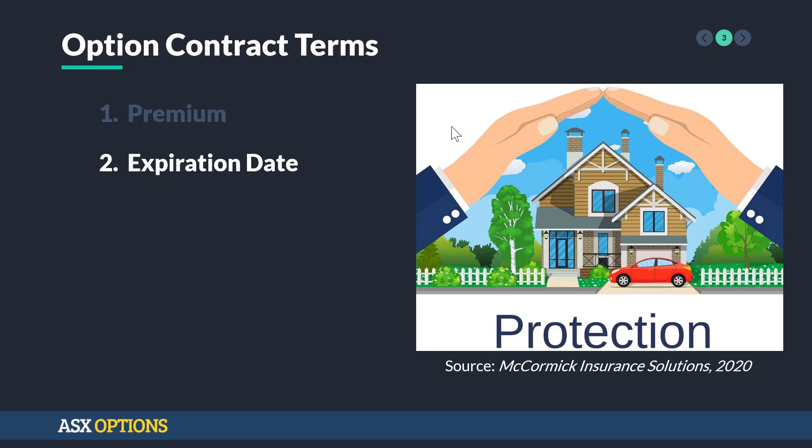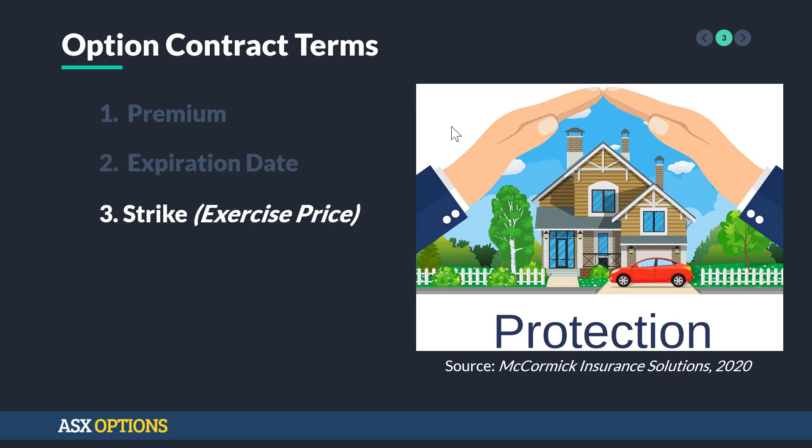Number two is the expiration date. Like with insurance products, you can pick the term of expiry — do you want house insurance for one year, two years, ten years? Number three is the strike or exercise price. Consider this to be like how much the insurance holder will receive if a certain event occurs. This is the level that you're willing to buy or sell at, and this determines your payoff structure.